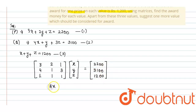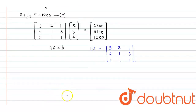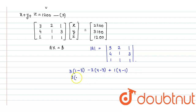Now we will use Ax equals to B to solve this matrix. So we can write mod of A equals to the determinant of the matrix with rows (3,2,1), (4,1,3), (1,1,1). On expanding along the first column: 3 into (1 minus 3), minus 2 into (4 minus 3), plus 1 into (4 minus 1). So 3 into minus 2, minus 2 into 1, plus 1 into 3. This gives minus 6, minus 2, plus 3, which equals minus 5.